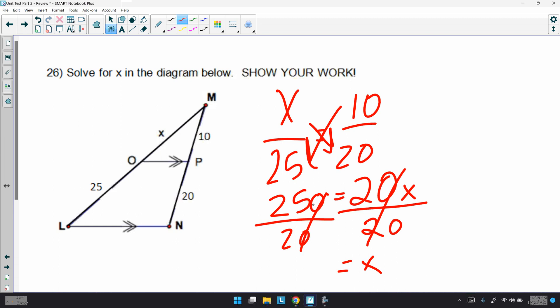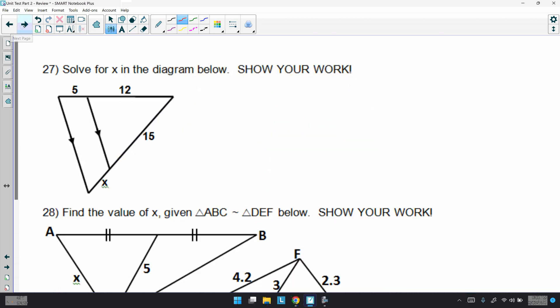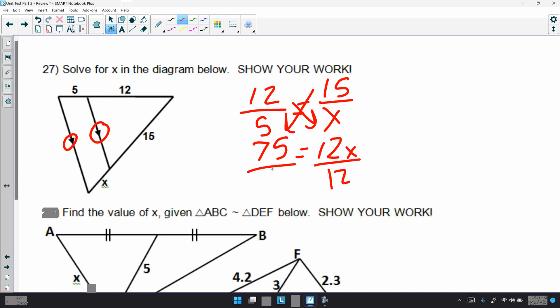Almost done. Solve for x in the diagram below. Show your work. Again, we have the side-splitting segment theorem. So, we can do x over 25, 10 over 20, and then cross-multiply. So, that would be 250, 20 times x, divide by 20. It does cancel. You could argue you can cancel the 0, so it's 25 divided by 2, which is 12.5.